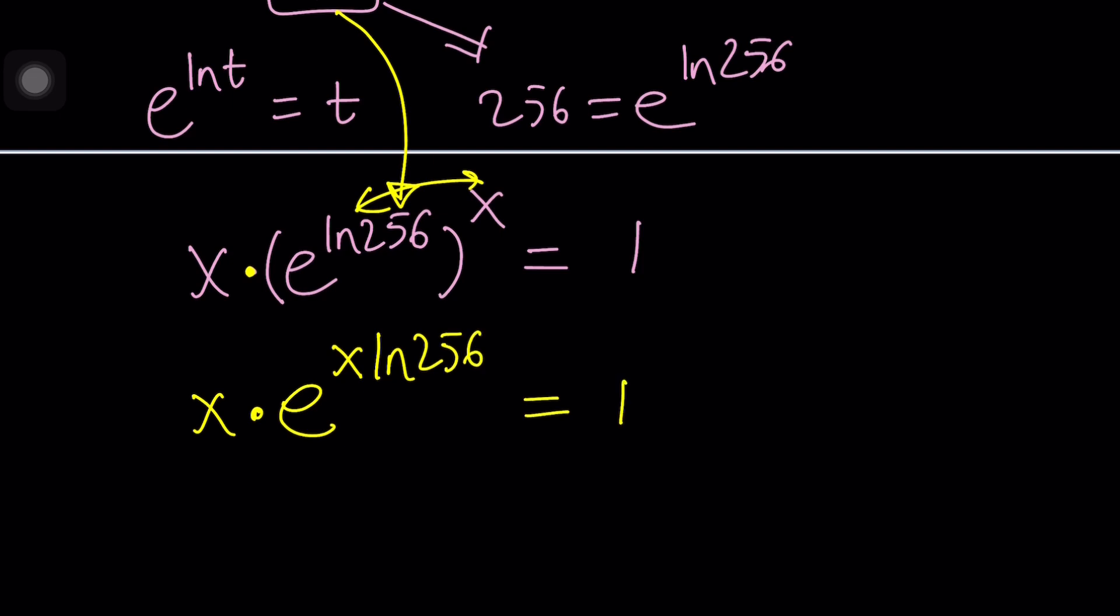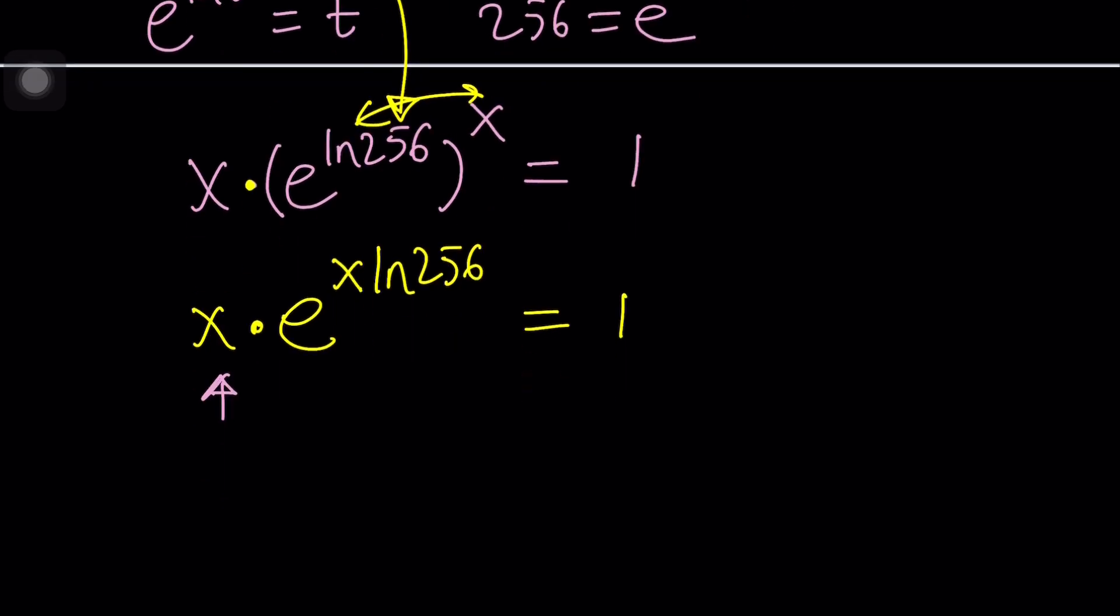Now, here's the next thing we're going to do. We're going to look at the exponent. What is the exponent? x times ln 256. But we only have x here, we don't have ln 256. And why do we need that? Here's the thing, we want something like this: t e to the t. So that when we apply Lambert's w function, we can get a t as an output.